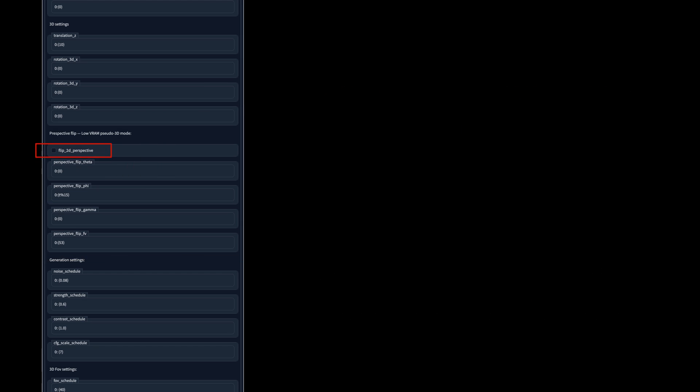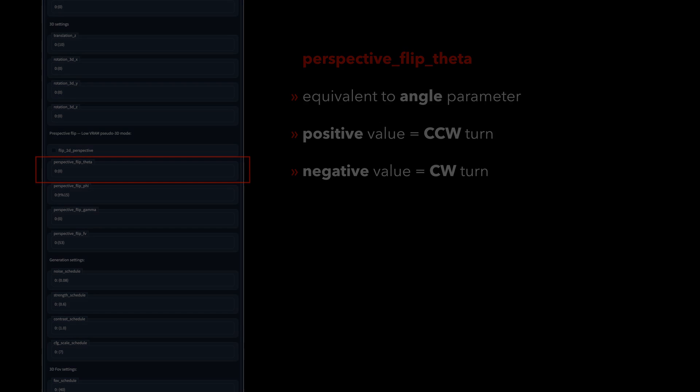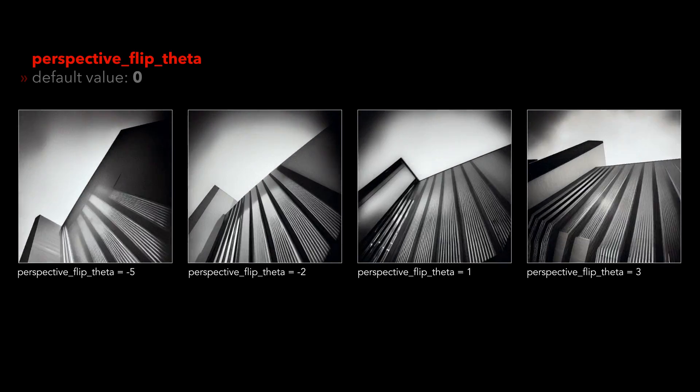To activate the parameters, make sure to check the box for flip 2D perspective. The theta input field flips the perspective on the angle parameter, and a negative value rotates the camera clockwise, a positive value counterclockwise.